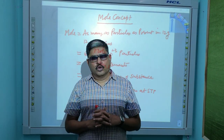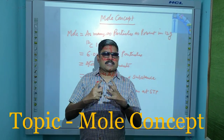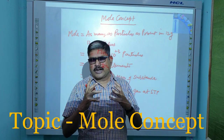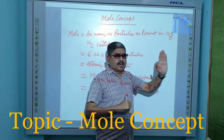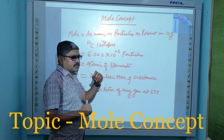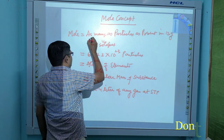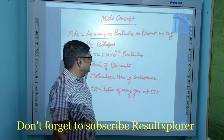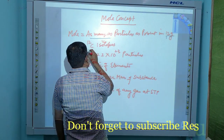Now about the definition of mole: it is the amount of substance which contains as many particles or entities as present in 12 grams of C-12 isotopes. So there are two things. This definition is related to the number of particles, and secondly, it is compared with 12 grams of carbon-12 isotopes.